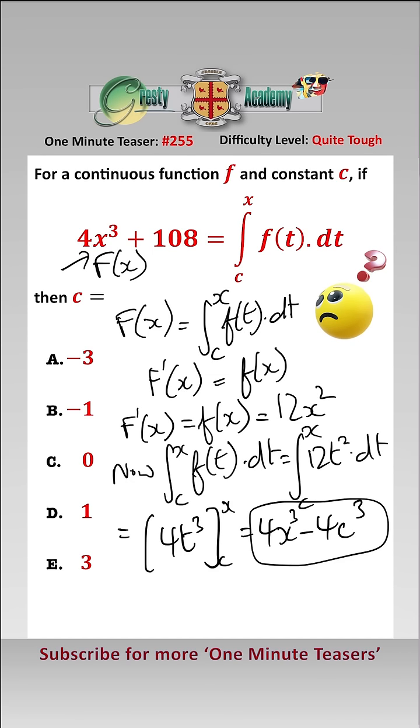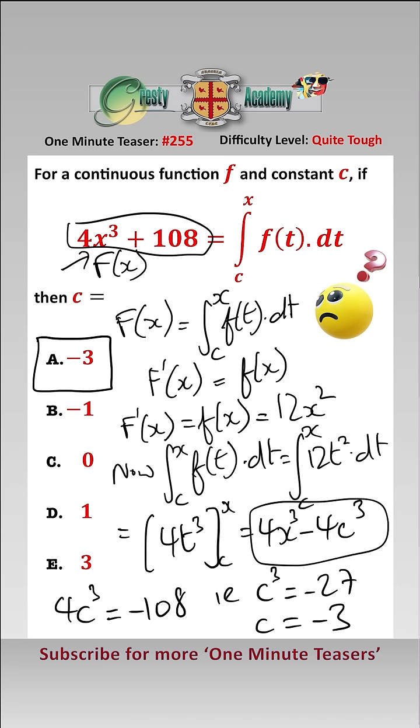Comparing this to this, we have that 4c cubed equals minus 108, i.e., c cubed equals minus 27, so c is minus 3, which is answer A.